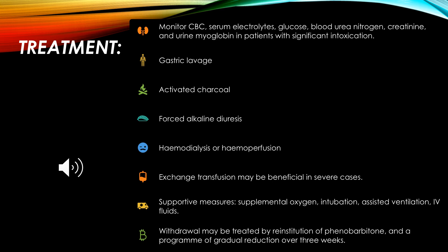For treatment, monitoring includes complete blood count, serum electrolytes, glucose, blood urea nitrogen, creatinine, and urine myoglobin to assess intoxication. Treatment steps include gastric lavage, activated charcoal as an absorbent, forced alkaline diuresis, hemodialysis, and hemoperfusion. Exchange transfusion may be beneficial in severe cases. Supportive measures include oxygen supplementation, intubation, assisted ventilation, and IV fluids. If withdrawing treatment, phenobarbitone should be reintroduced and the dose gradually decreased.